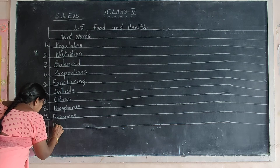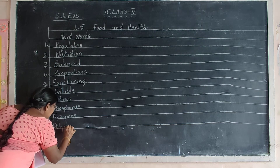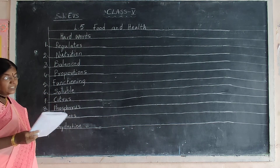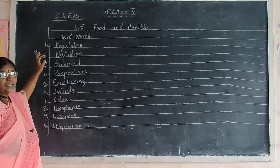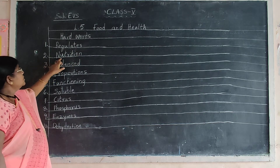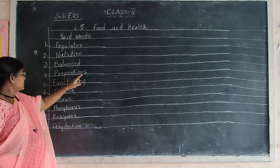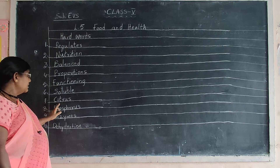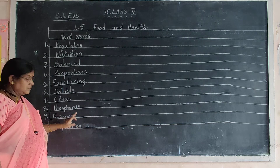Tenth one: Dehydration. Put the tenth in the margin. D-E-H-Y-D-R-A-T-I-O-N. Dehydration. I repeat the words again — hard words: first one Regulates, second one Nutrition, third one Balanced, fourth one Proportions, fifth one Functioning, sixth one Soluble, seventh one Citrus, eighth one Phosphorus, ninth one Enzymes, tenth one Dehydration.